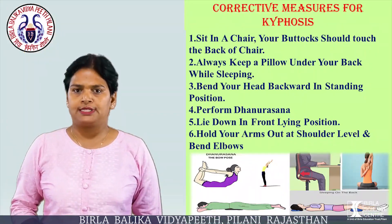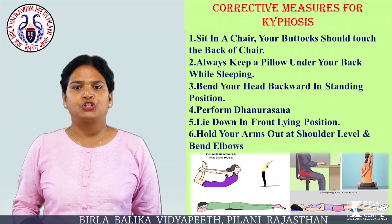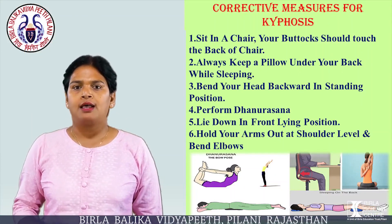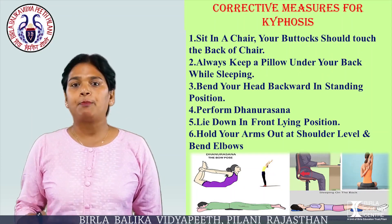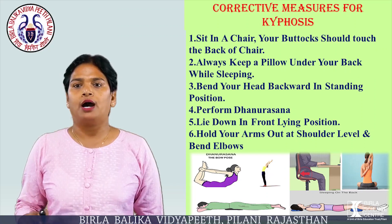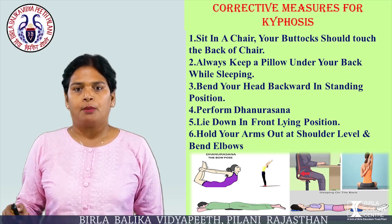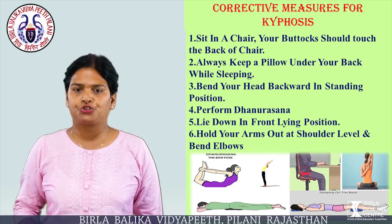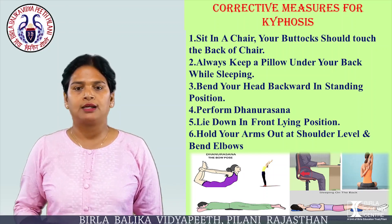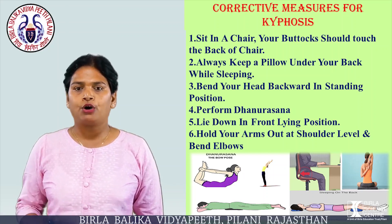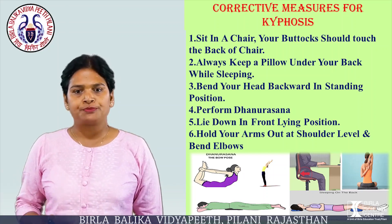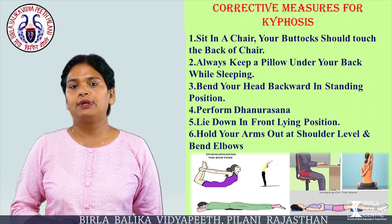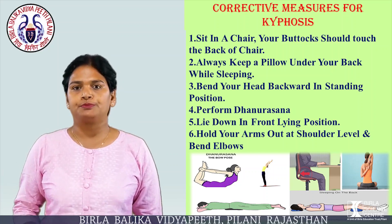Corrective measures for Kyphosis: Sit in a chair so your buttocks touch the back of the chair. Always keep a pillow under your back while sleeping. Bend your head backwards in standing position. Perform Dhanurasana. Lie down in front lying position, hold your arms out at shoulder level, and bend elbows.